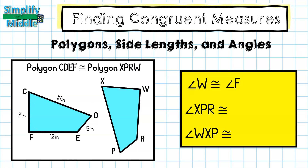Let's try that with the measure of angle XPR. Remember, I always want to look at the angle in the center, which is P. P is written second in order, so I want to look at the second letter in my first polygon, which would be D. So angle CDE is congruent to angle XPR. Remember, if you wrote this a different way, D needs to be in the center, or you could simply write the measure of angle D.